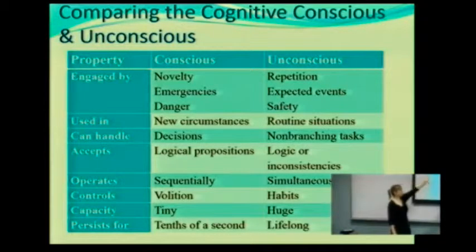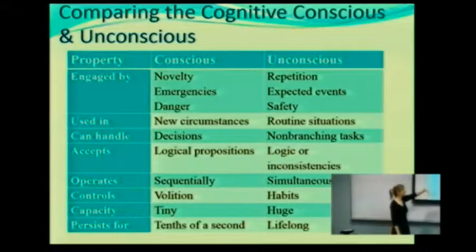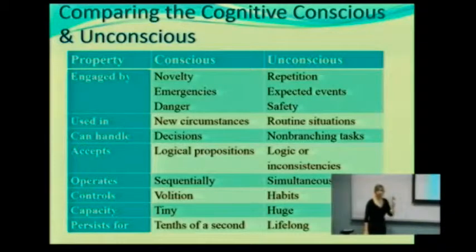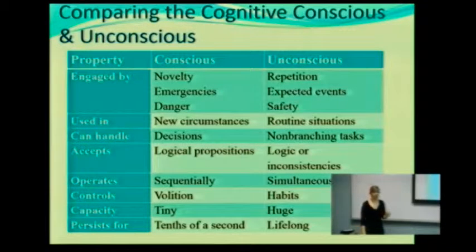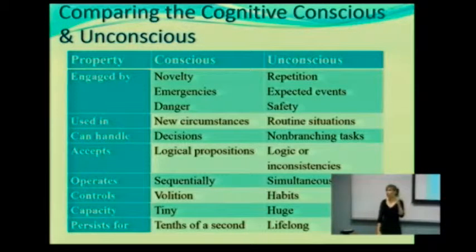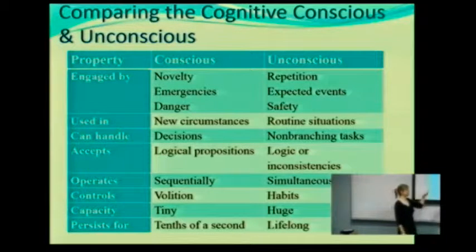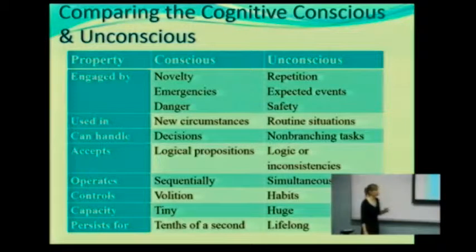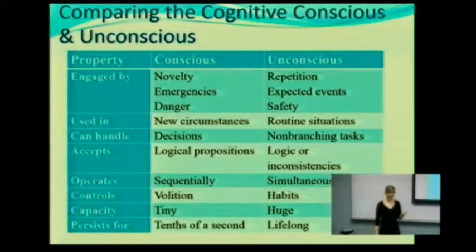The consciousness tends to be used more in new circumstances, whereas the unconscious is more used in routine circumstances. The consciousness can handle decisions; the unconscious handles non-branching tasks. The unconscious is not the one making decisions or reasoning about information — I'm talking about being able to process information deliberately.